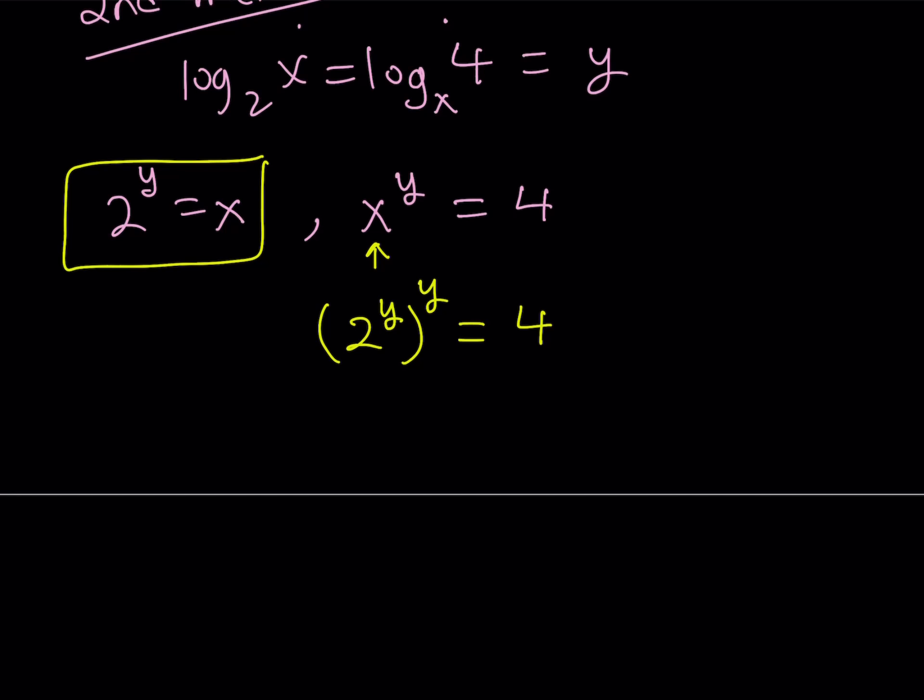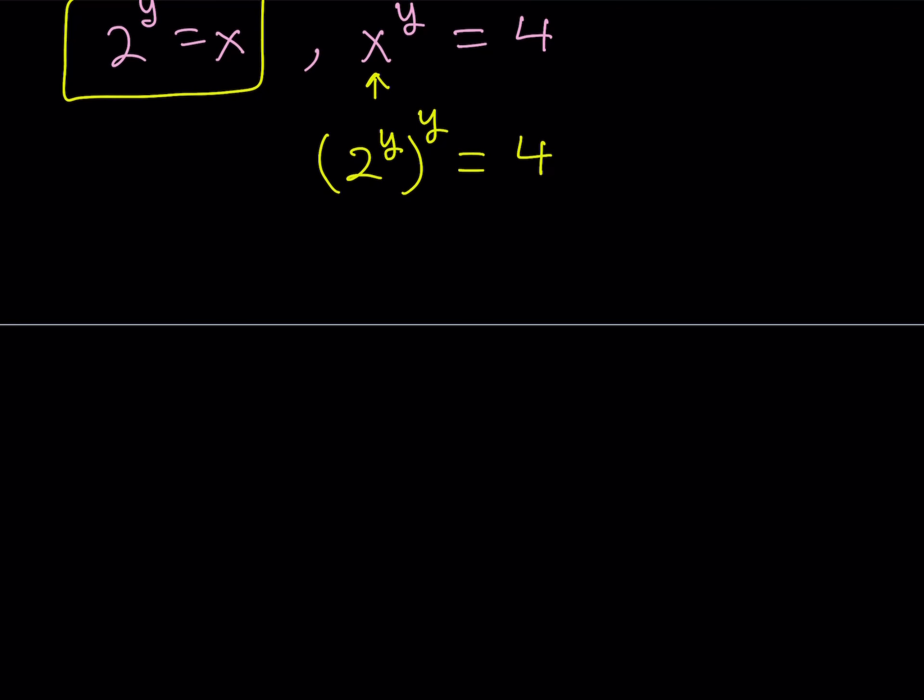And that's going to give us 2 to the power y to the power y is equal to 4. Now, remember, we're not solving for y. We are solving for x. But if we find y, then we can find x. So, by using the power of a power rule, this becomes 2 to the power y squared equals 4.